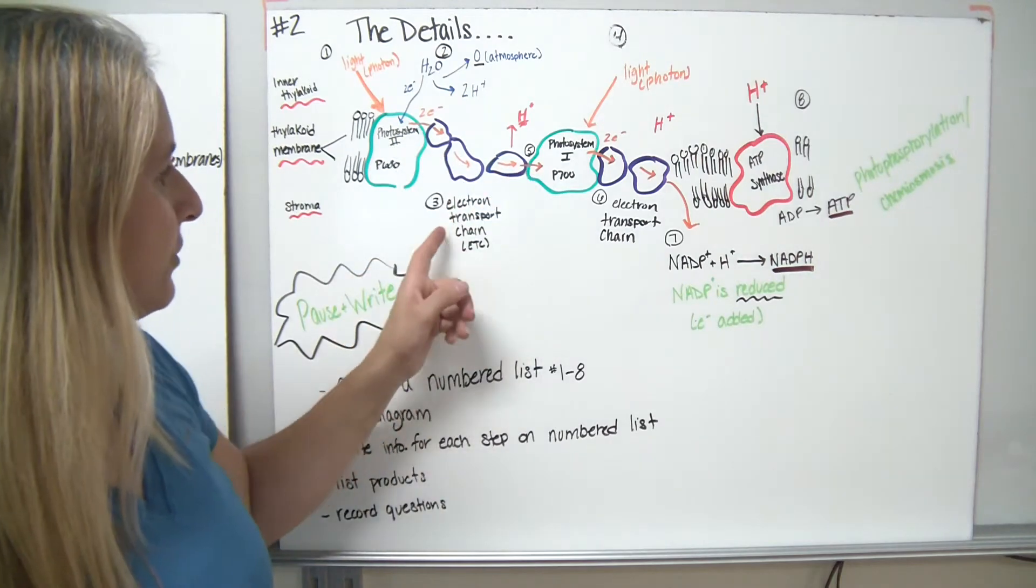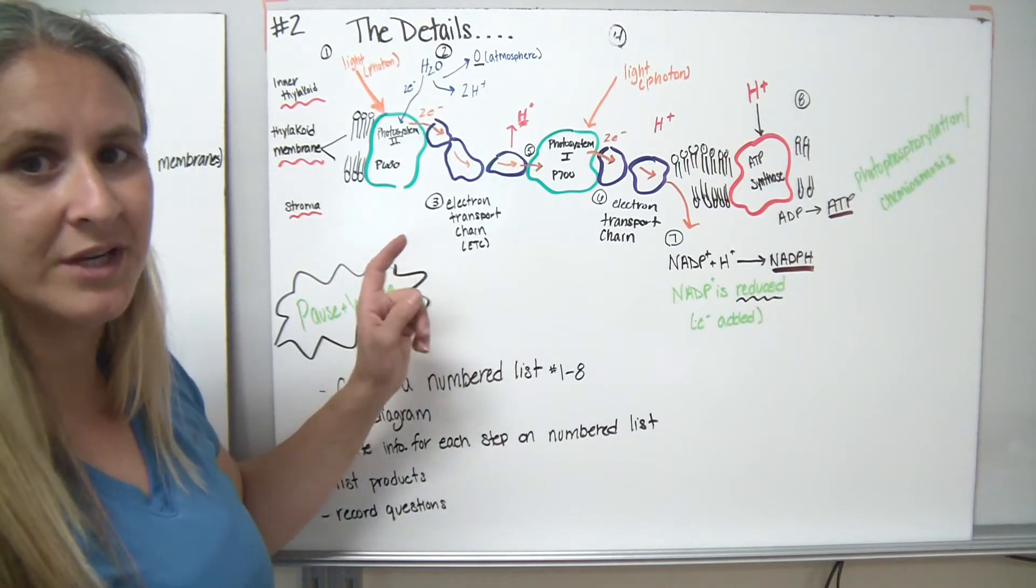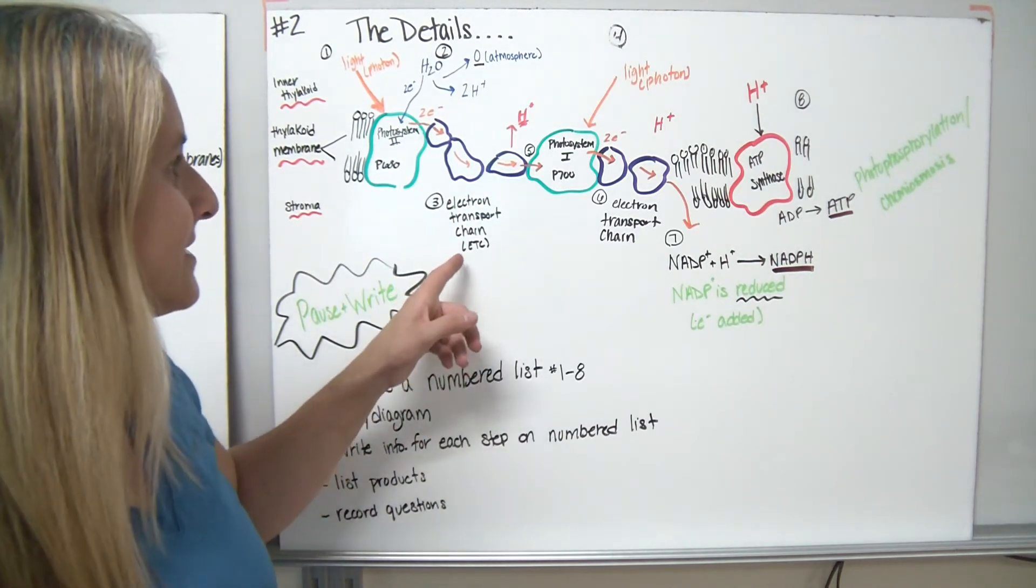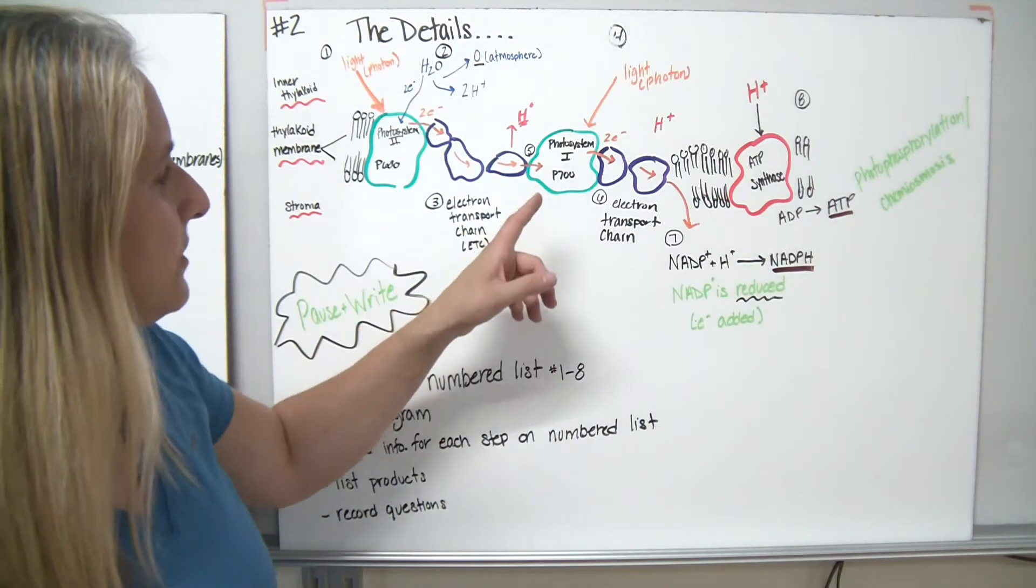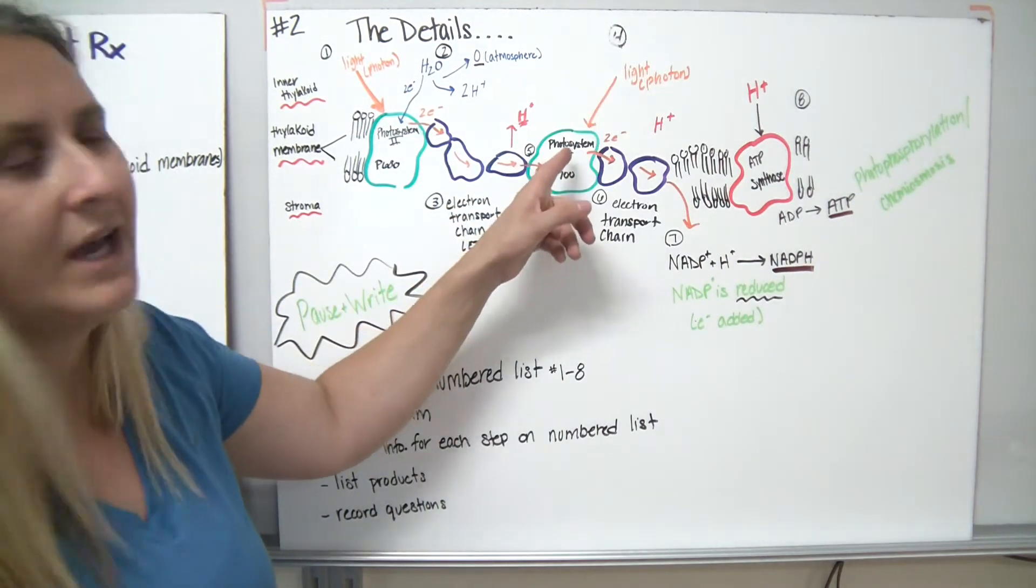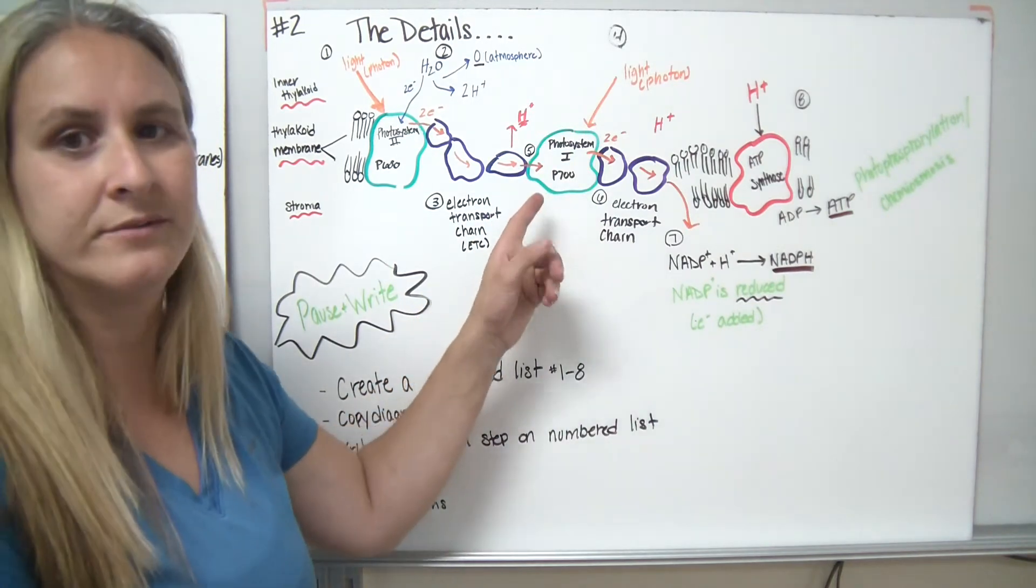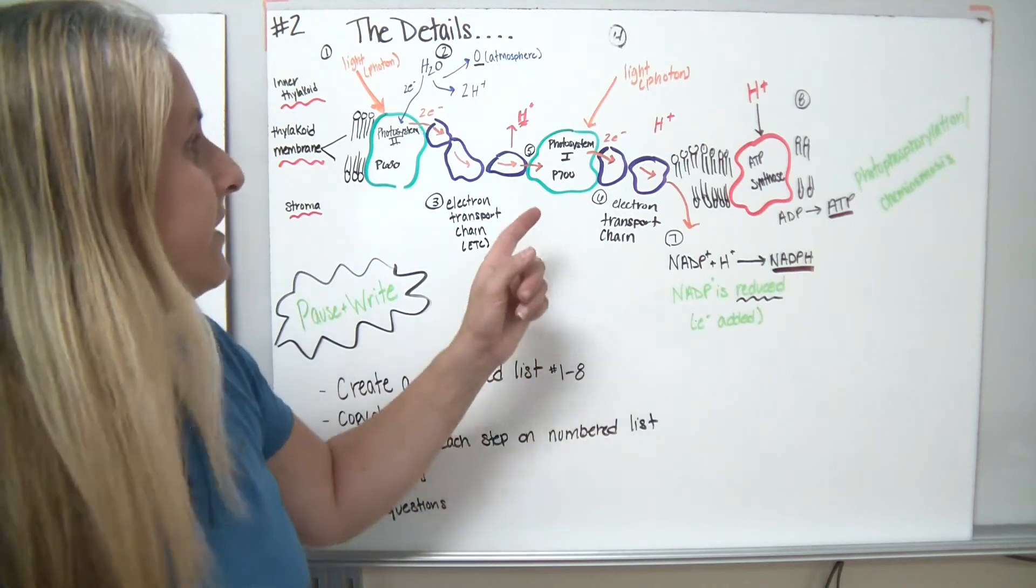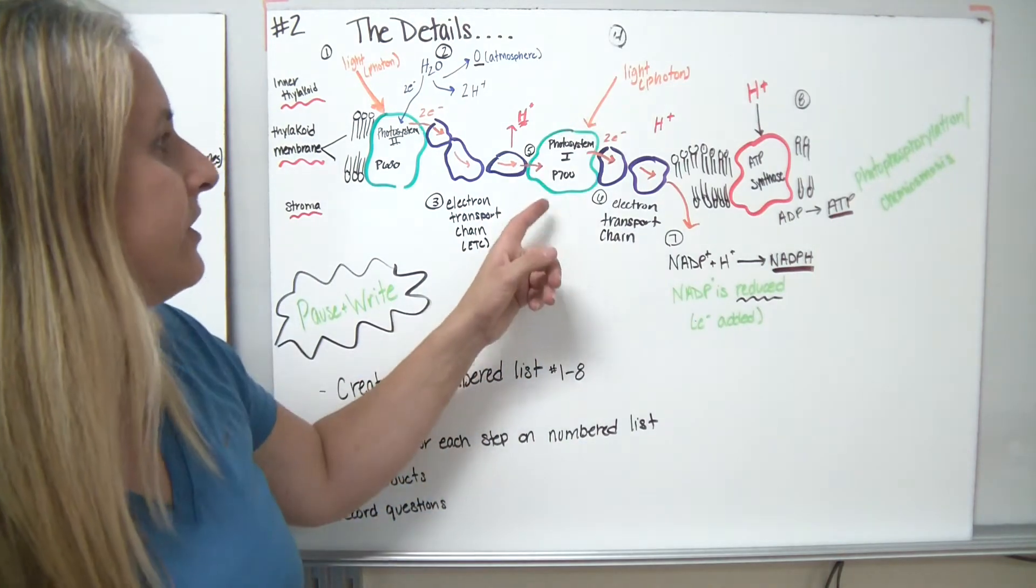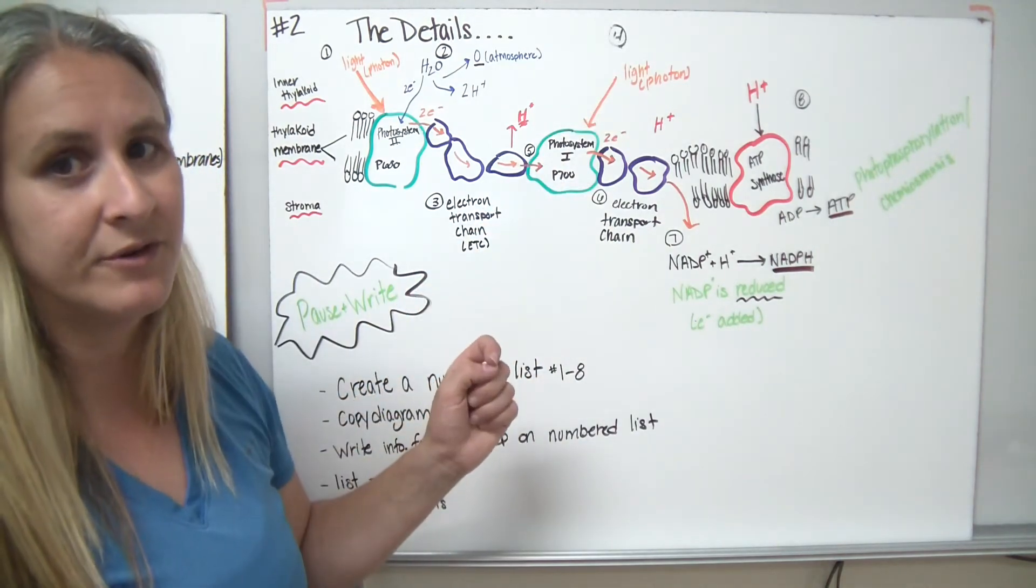So our two electrons travel over through the electron transport chain. We usually abbreviate that ETC. As those two electrons head over, they're actually going to have more light photons come in and excite photosystem one, which sometimes is also called P700. So step four here, we have the light photons exciting photosystem one.